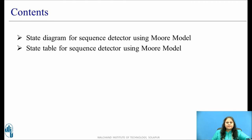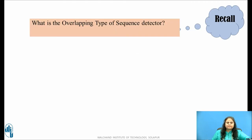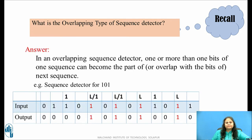These are the contents we will be covering in this session. Before moving ahead, pause this video and recall what is the overlapping type of sequence detector. In overlapping sequence detector, one or more than one bits of one sequence can become the part of the next sequence.